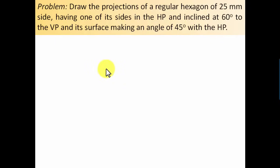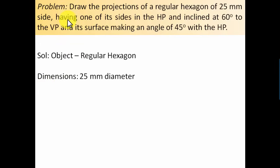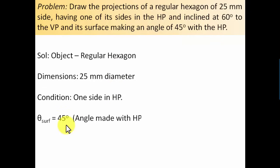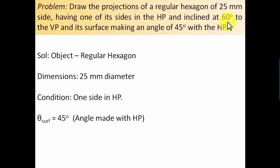Now let's extract the data. The object is a regular hexagon, all sides are 25 mm each. Condition one: one side is in the HP. Condition two: the surface makes an angle of 45 degrees with the HP, so theta-surface equals 45 degrees. And the edge already in contact with the HP is inclined at 60 degrees to the VP, so phi-edge equals 60 degrees.